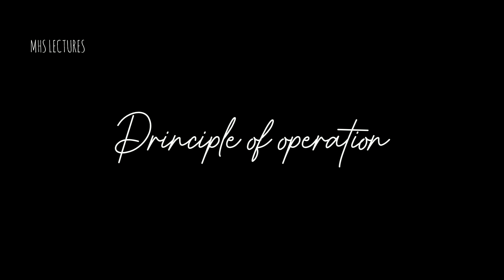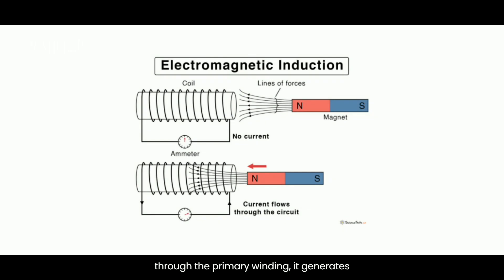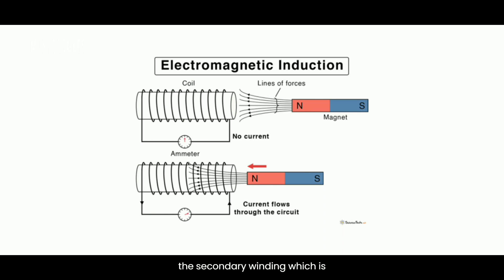Principle of Operation: Transformers operate based on the principle of electromagnetic induction. When an alternating current (AC) passes through the primary winding, it generates a magnetic field in the core. This magnetic field induces a voltage in the secondary winding, which is proportional to the number of turns in the windings.